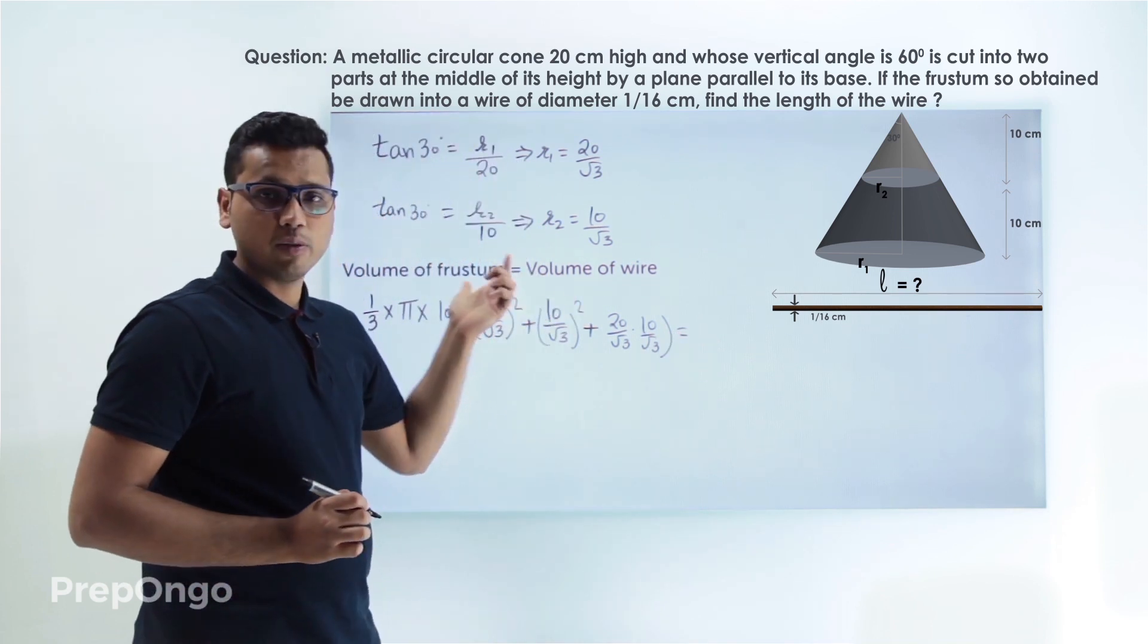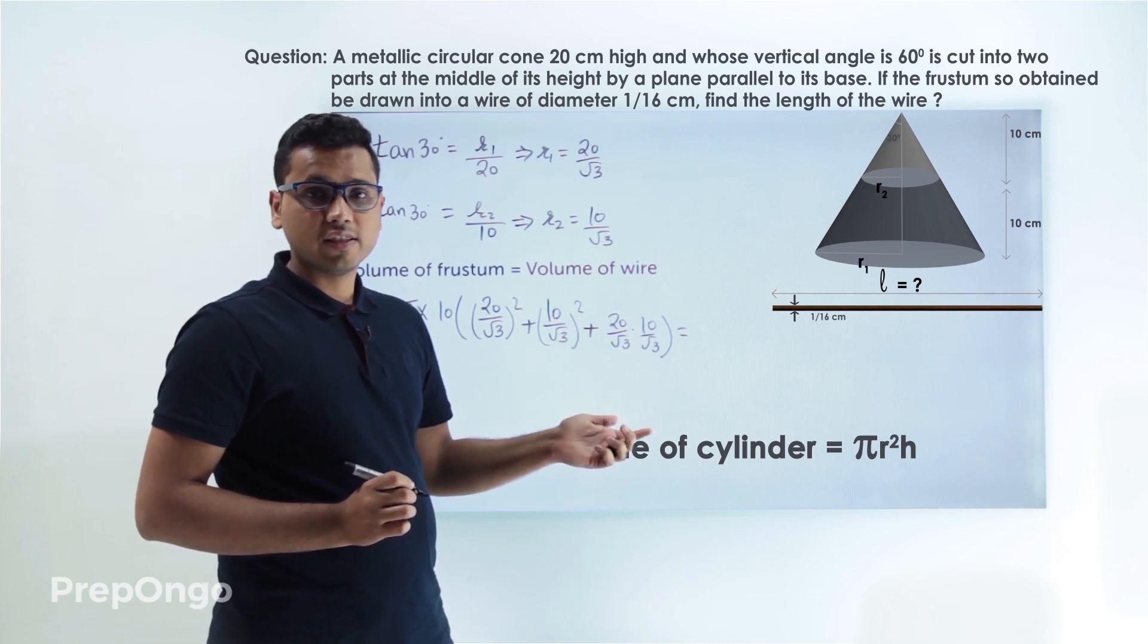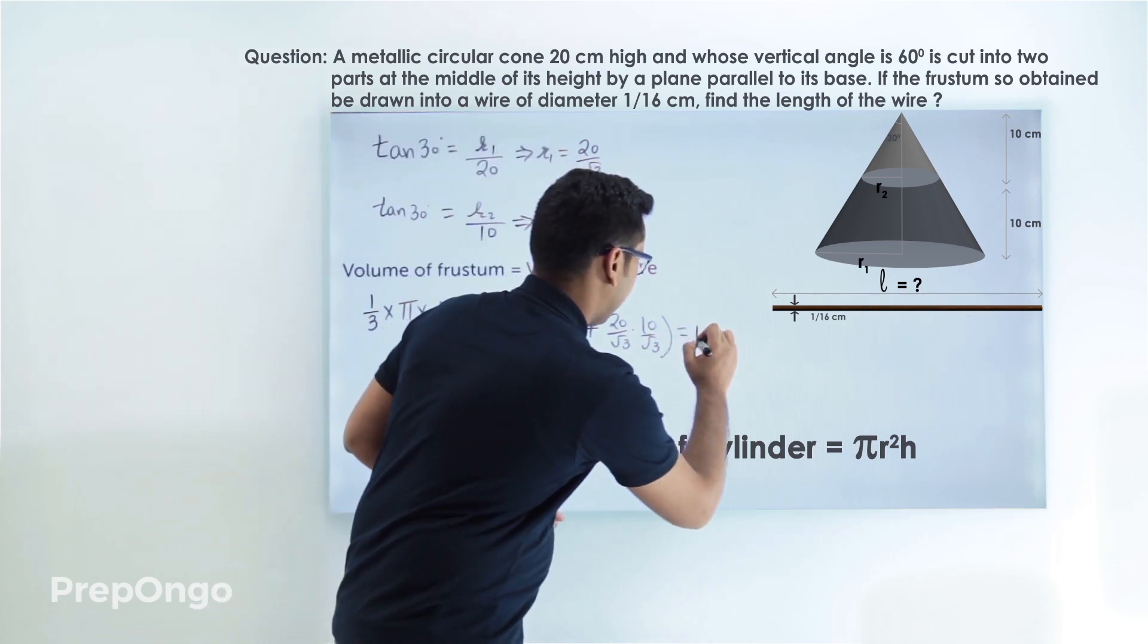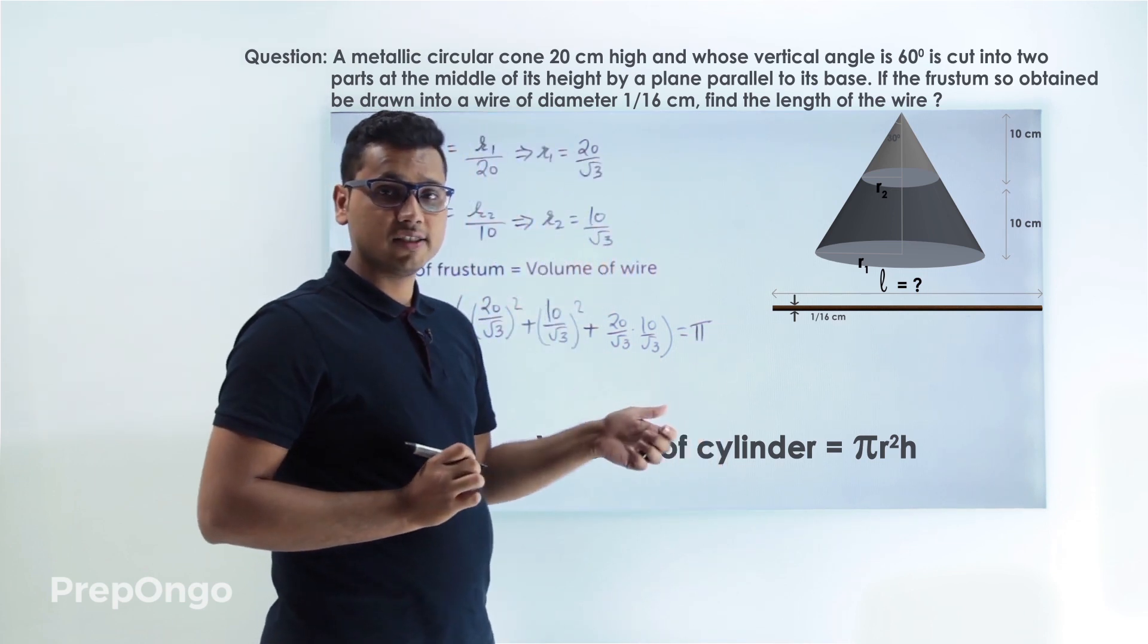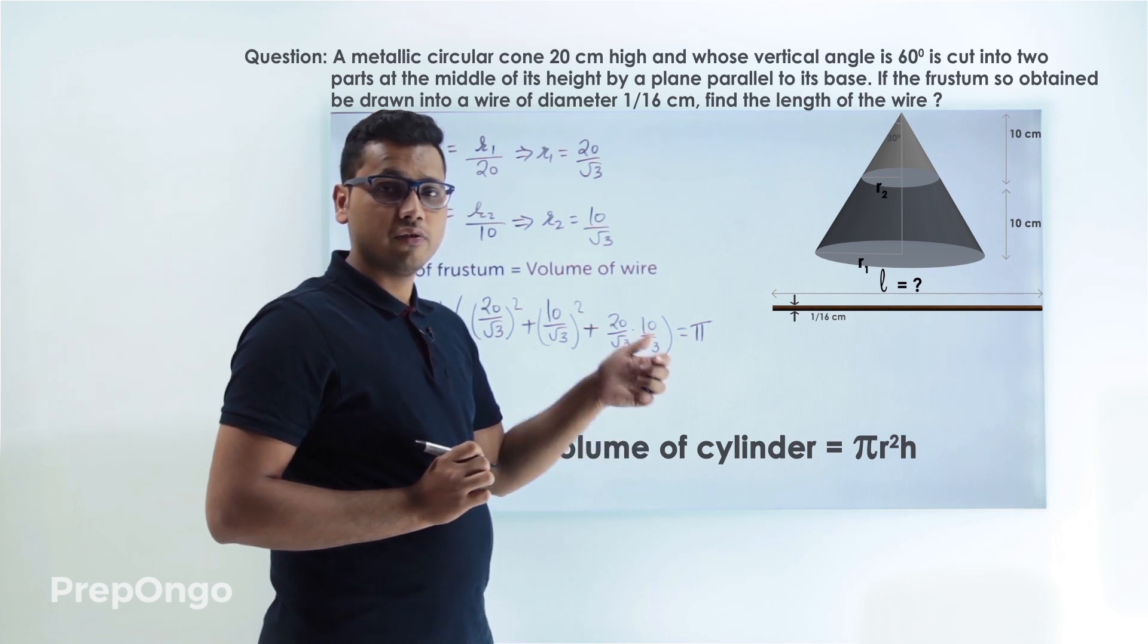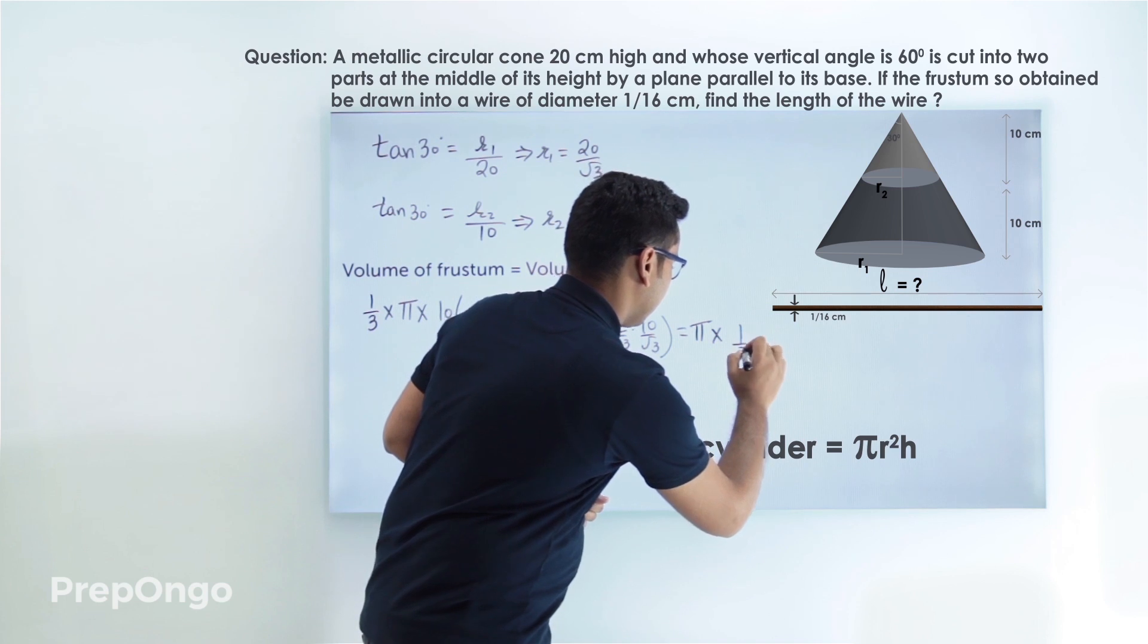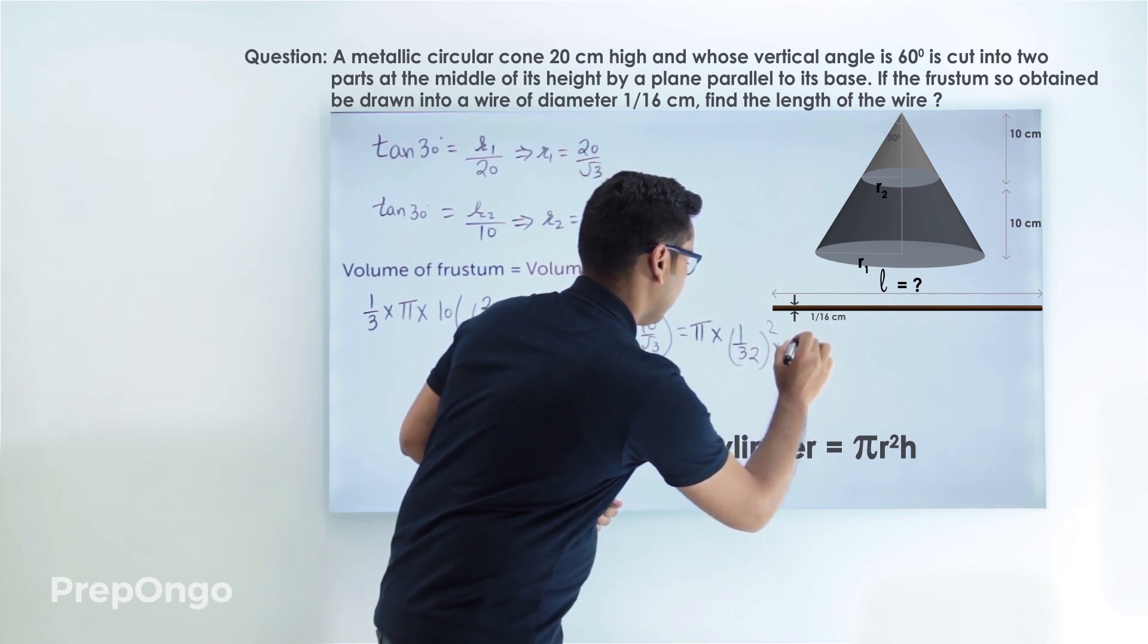This is equals to the volume of the wire. The volume of the wire is pi r square h since the wire is in the form of cylinder. So this is pi. Diameter of the wire is 1 by 16 so its radius will be equals to 1 by 32. So into 1 by 32 whole square into length of the wire.